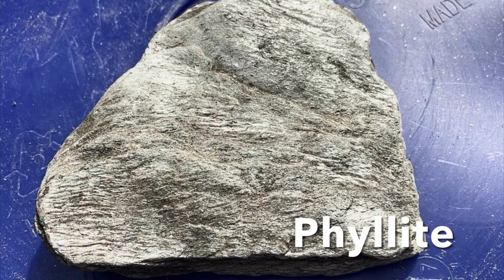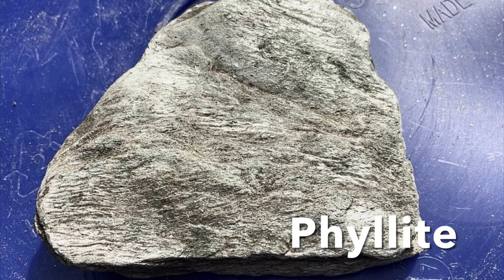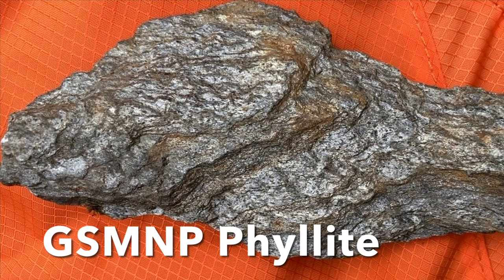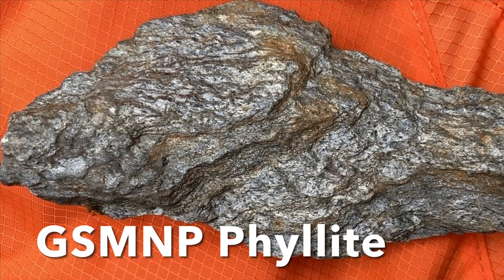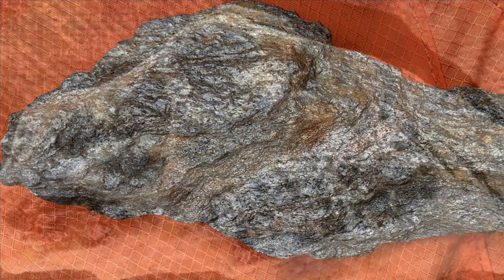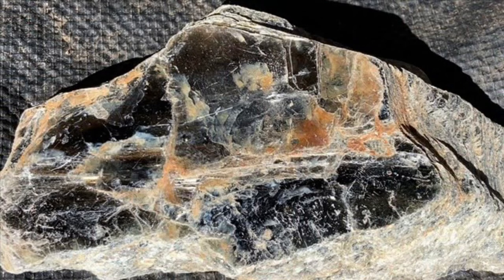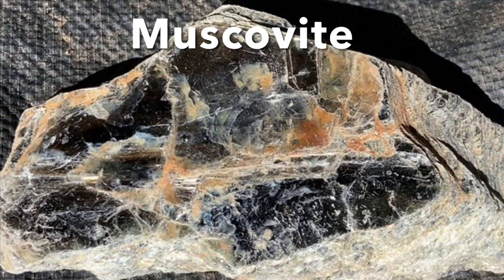Here we have phyllite, the next step in the metamorphism of slate. As metamorphic pressure and heat increase, it begins to form muscovite in the rock, and that muscovite begins to shine. In phyllite you can't see the muscovite crystals yet, but they do impart the shininess. Here's some shiny phyllite from the Great Smoky Mountains National Park in the Copper Hill Formation. And here is a hunk of the mineral muscovite mica — this is what will become more and more evident as phyllite is metamorphosed further into schist. Muscovite can separate into very thin layers, and that too becomes more evident in the schist.